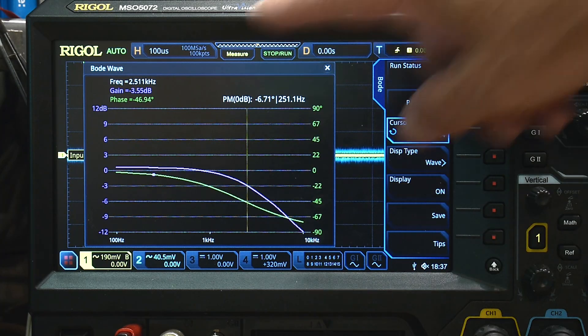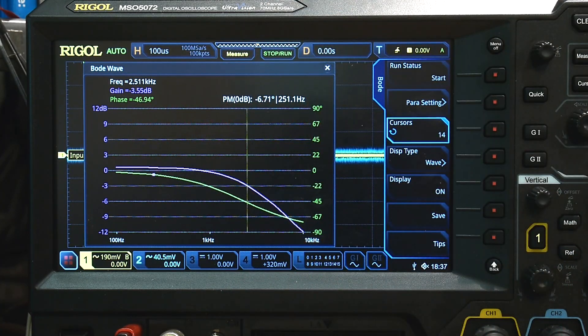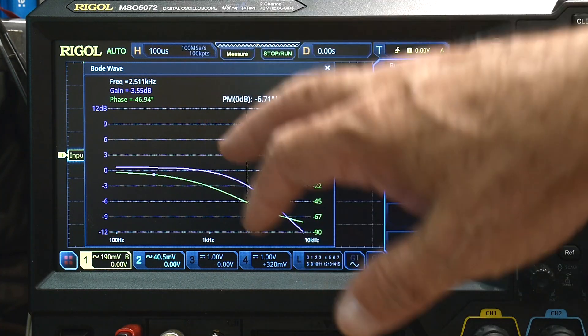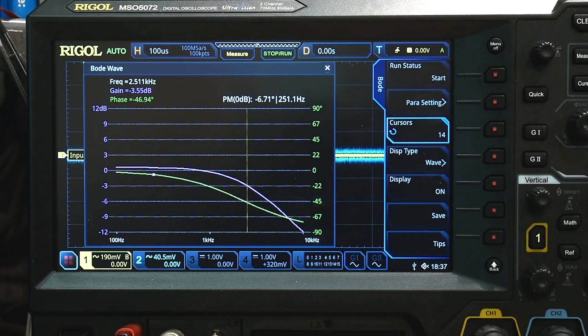All right. And also at that point, the phase is about 45 degrees, minus 45 degrees. So this is an official Bode plot. It has both gain and phase information, and allows you to design filters and stuff.